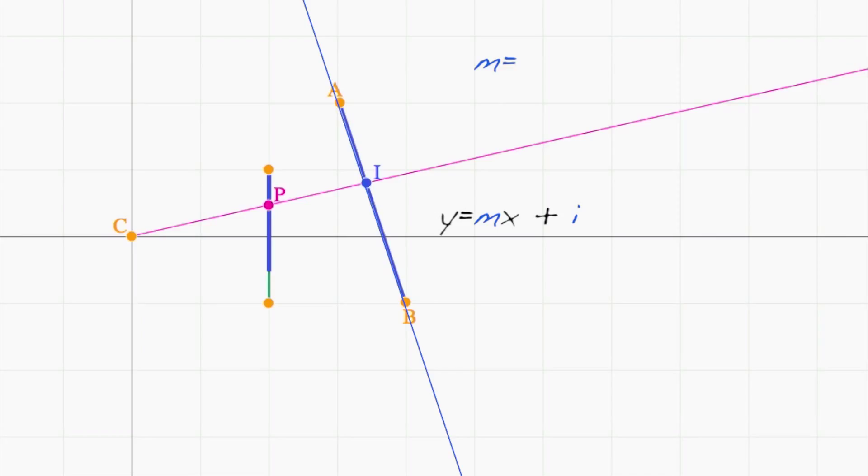The slope m is the change in y divided by the change in x. Meaning that if AB is a vertical line, there is no change in x. So computing the slope would mean dividing by zero, which is bad.